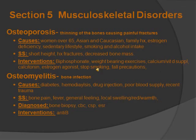Now, osteoporosis versus osteomyelitis. Osteoporosis is the thinning of the bones, which causes painful fractures. Causes include women over 65, Asian or Caucasian ethnicity, family history, estrogen deficiency, sedentary lifestyle, smoking, and alcohol intake. Signs and symptoms are short height, fractures, and decreased bone mass. Interventions include bisphosphonates, weight-bearing exercises with dumbbells, calcium, vitamin D supplements, calcitonin, estrogen agonists, and stopping smoking. The main concern is fall precautions because they are at risk for falling.